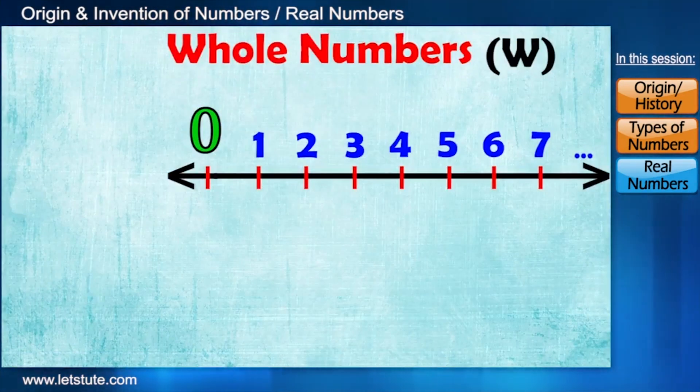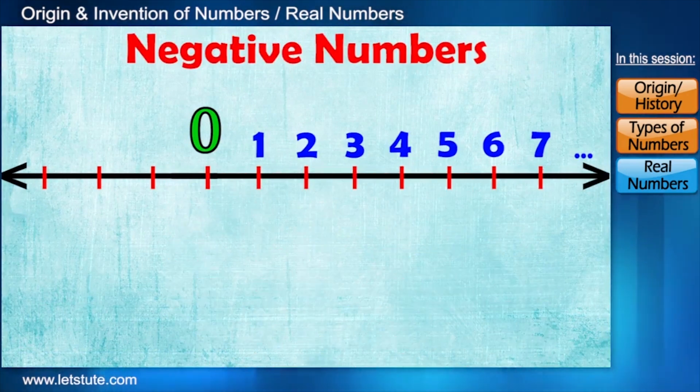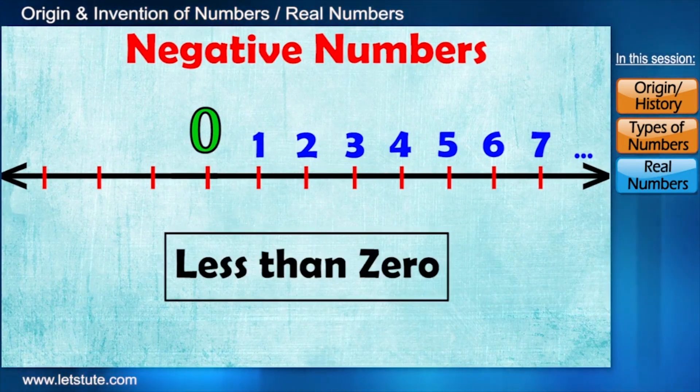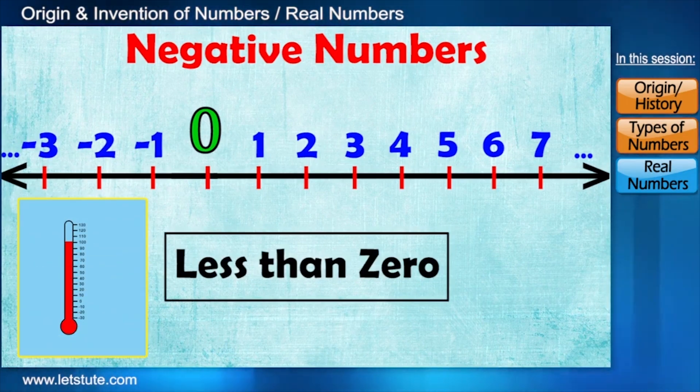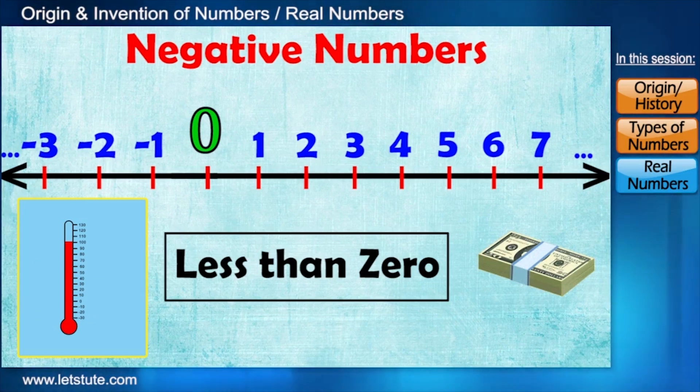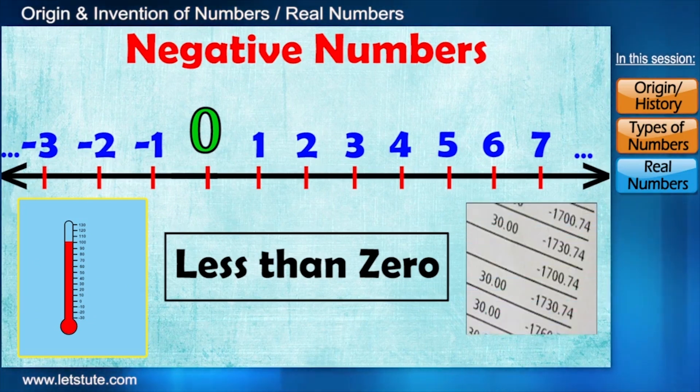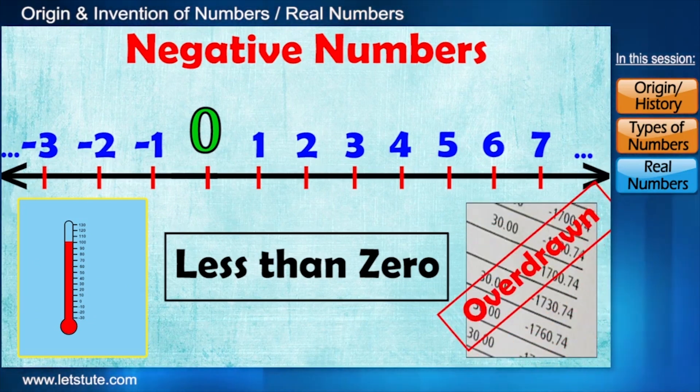Now apart from these, we also have negative numbers, which are less than 0. Like minus 1, minus 2, minus 3 and so on. They are used to show temperature below 0 degrees. Or when you spend more money than you have in your bank account. It shows up as a negative number, which also means that your account is overdrawn.